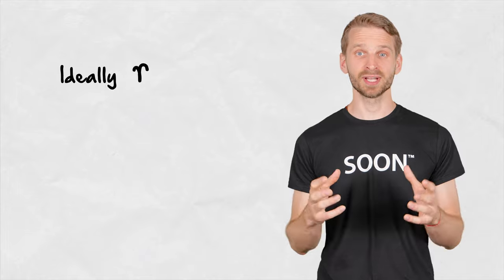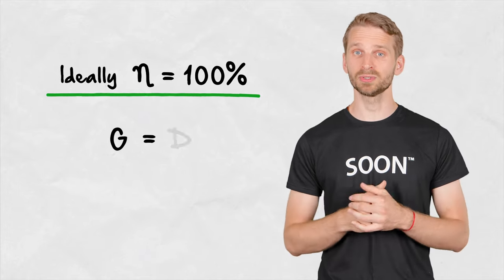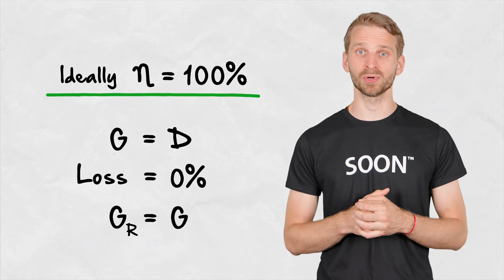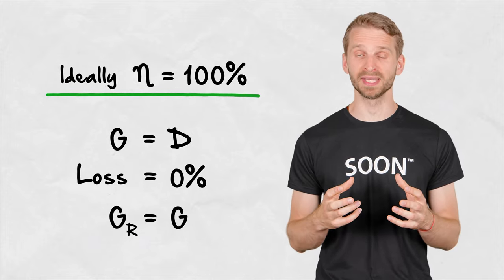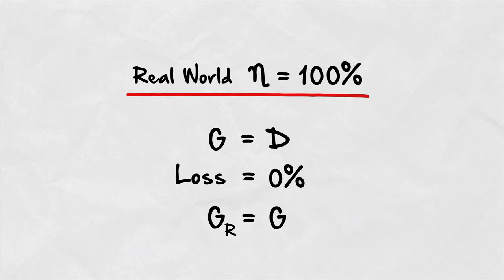Ideally, antenna radiation efficiency would be 100%, meaning gain would be equal to directivity and all the power at the antenna ports is radiated into free space and none is lost in the materials. But since real-world materials always introduce some loss, we can only approach this value. The same goes for the realized gain. There is always some mismatch between a feeding cable and an antenna, so realized gain is always smaller than the absolute gain.